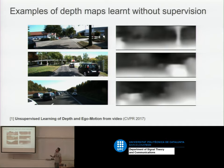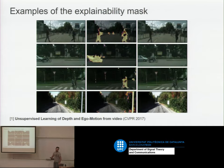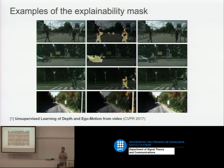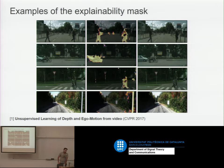These are some results — learned from video without any supervision. From an input image we are generating this depth map. It's not super accurate, but it's quite impressive that without any supervision we can achieve that. The explainability maps obtained are quite sensible — we are seeing people walking, pedestrians, which are not subject to rigid movements. The explainability mask says don't take that into account in the loss because it's not helpful. We also see motorcycles, more people, plants moving due to wind.